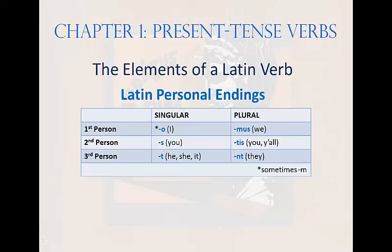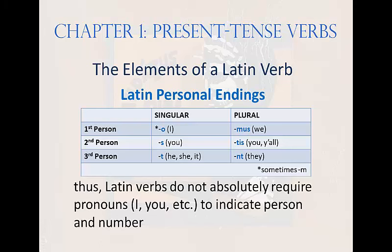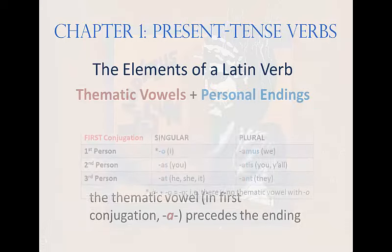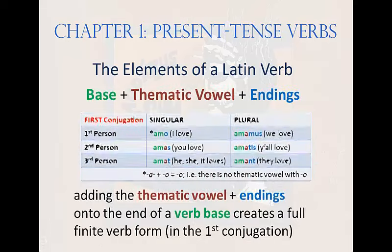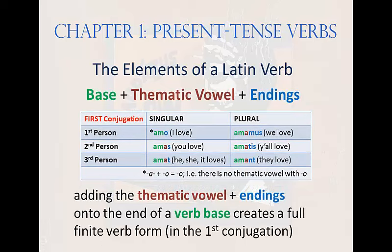The Latin personal endings used at the end of verbs to indicate person and number are shown in the chart. Thus Latin verbs do not absolutely require pronouns like I or you to indicate person and number. These endings are then appended onto a thematic vowel. In first conjugation, that thematic vowel is A. Note that there is a minor exception: the thematic vowel A is lost in the first person singular.